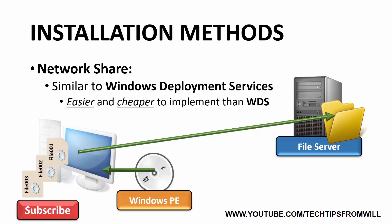Using a Network Share is also easier and cheaper to implement than Windows Deployment Services. However, there's one significant downside: Network Shares are only suitable for small environments that require just one or two installs. The reason for this is because, unlike Windows Deployment Services, installing from a Network Share does not support Multicast. Installing Windows 10 onto multiple devices at the same time using a Network Share will significantly slow down the install time, as computers are unable to access the exact same install files simultaneously.